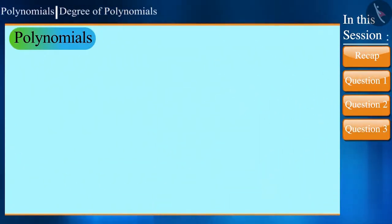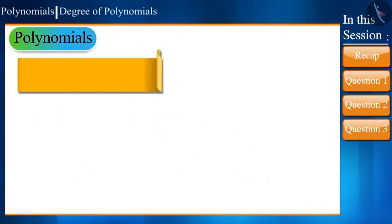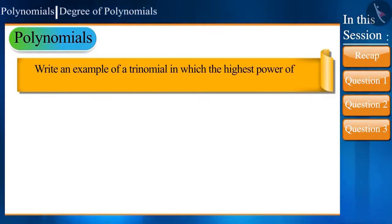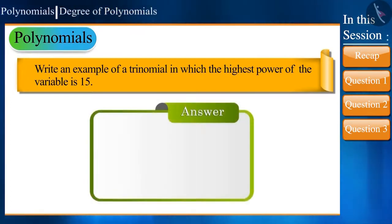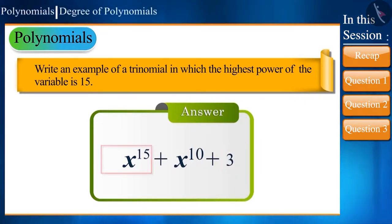Let's see our next question. Here we have to write an example of a trinomial in which the highest power of the variable is 15. The answer could be as follows: x^15 + x to the power of any whole number other than 0 and less than 15, plus any number other than 0. You can also write the coefficient of x^15, which can be any number other than 0.